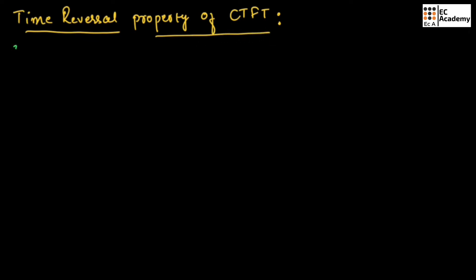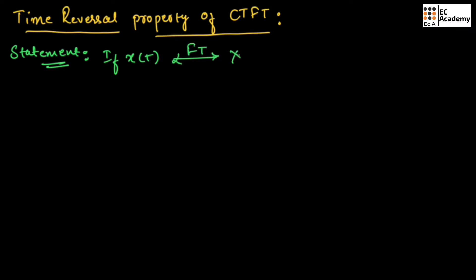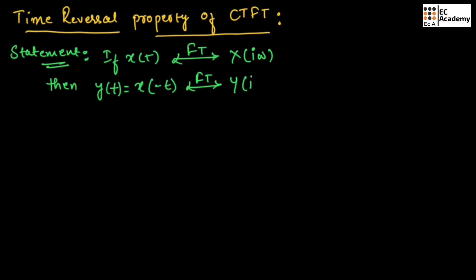Let us write this statement. It states that if X(t), for which we perform Fourier transform, gives X(jω), then Y(t) which is equal to X(-t) — if we perform Fourier transform on this — we should obtain Y(jω) that is equal to X(-jω).